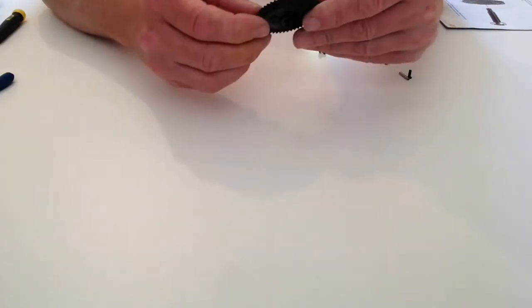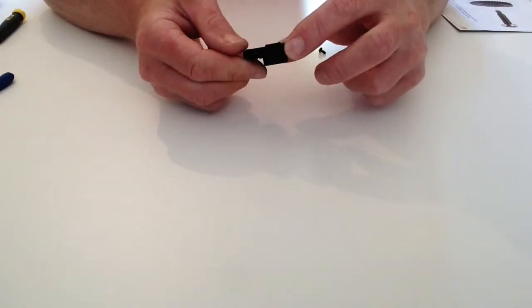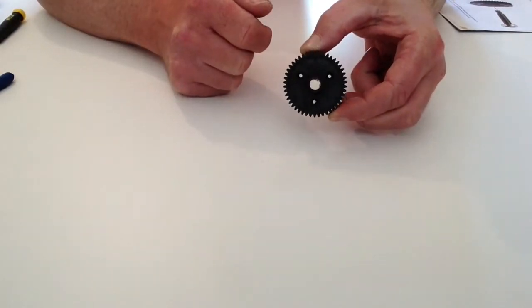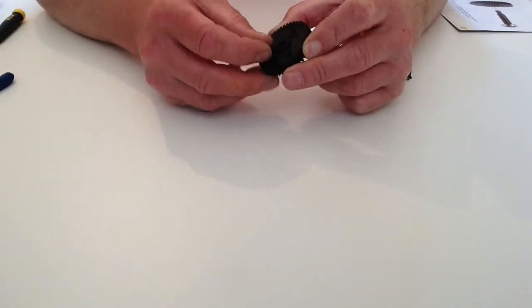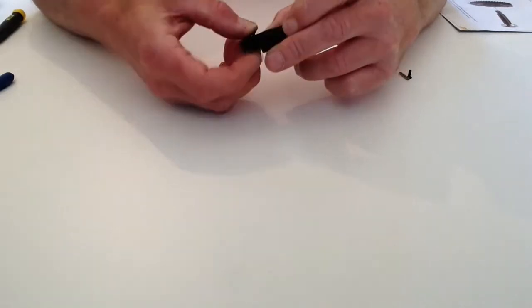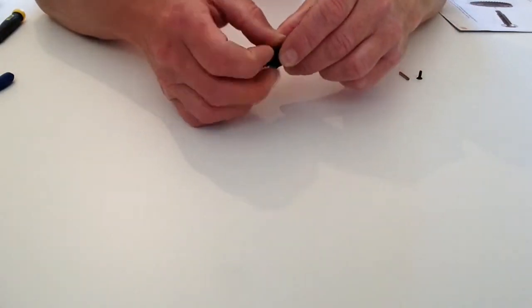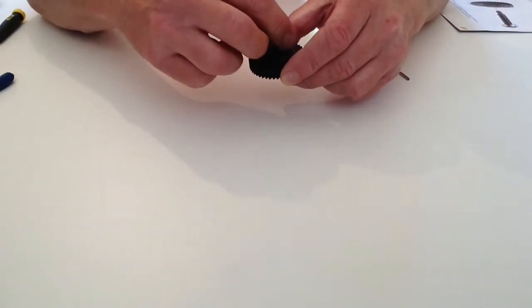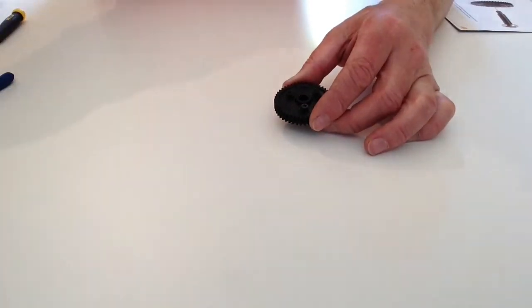Line the holes like so. You've got the three recesses on the other side. Take your three screws and screw those into position. Don't over tighten it. Just make sure that those three screws are down nice and tight. And then we're going to be fitting the shaft.